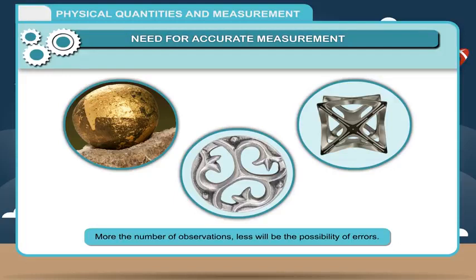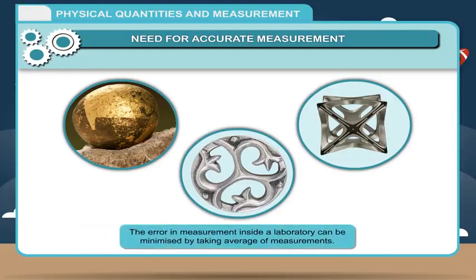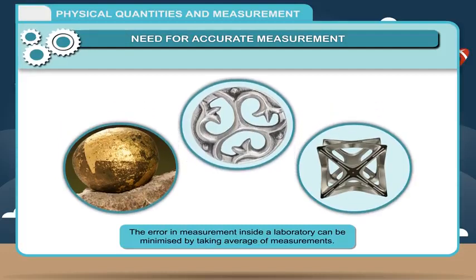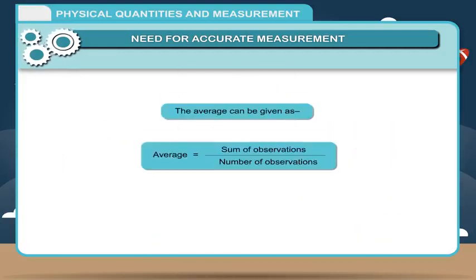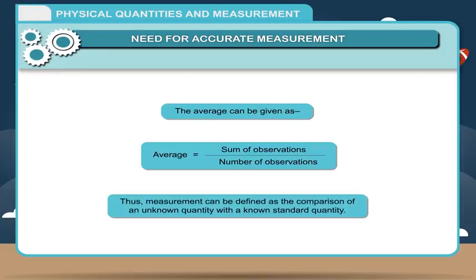More the number of observations, less will be the possibility of errors. The error in measurement inside a laboratory can be minimized by taking the average of measurements. The average is given as: Average = Sum of observations divided by Number of observations. Thus, measurement can be defined as the comparison of an unknown quantity with a known standard quantity.